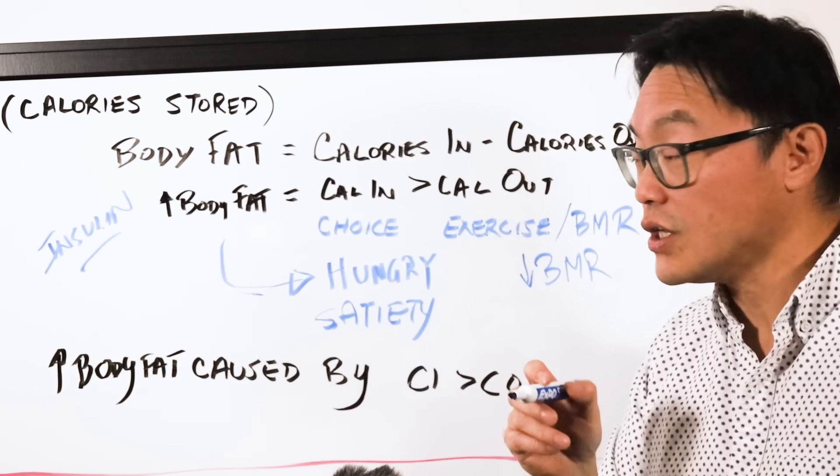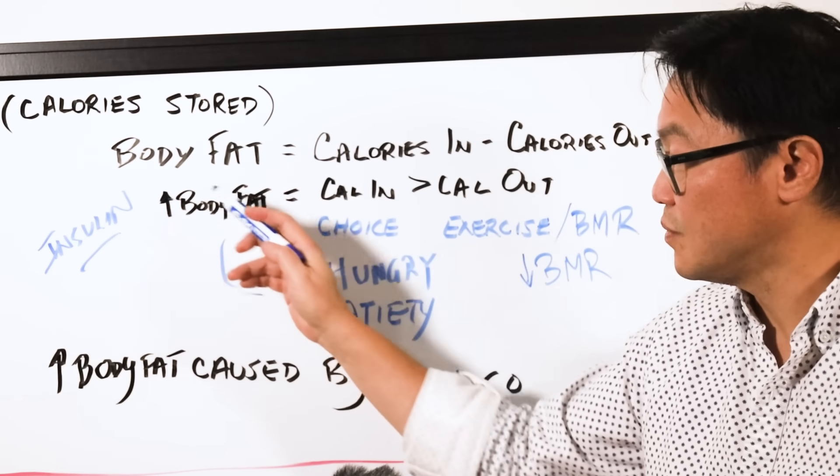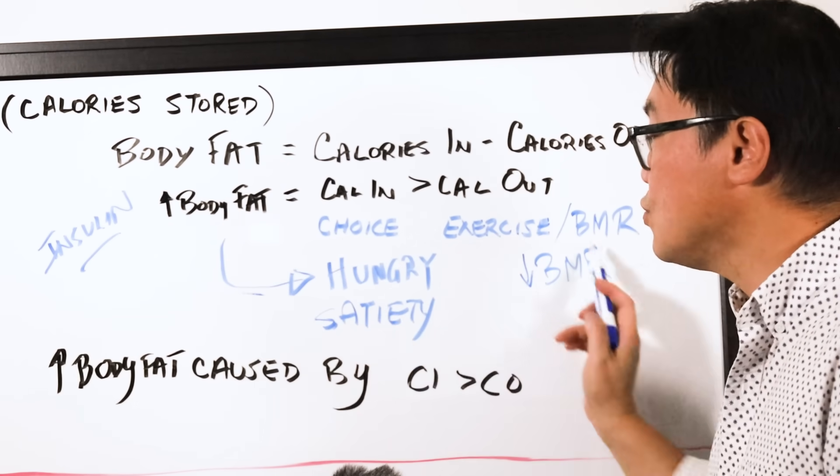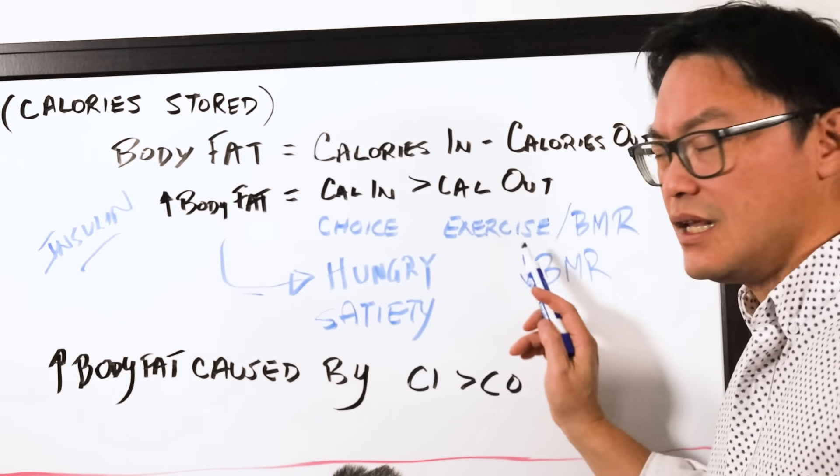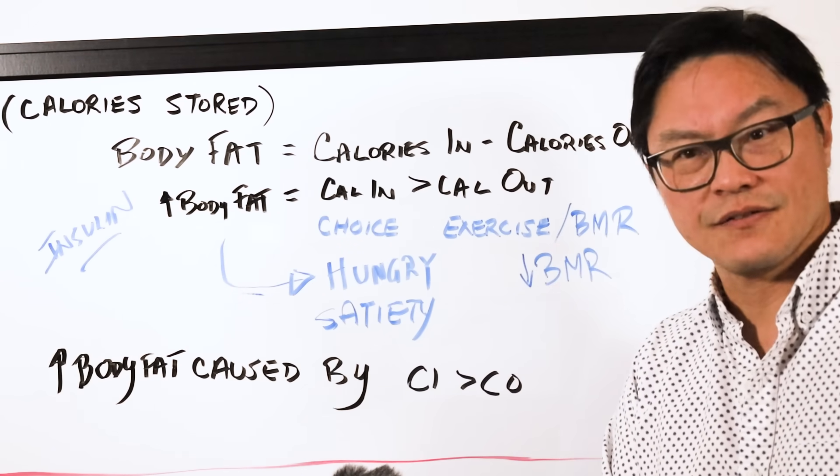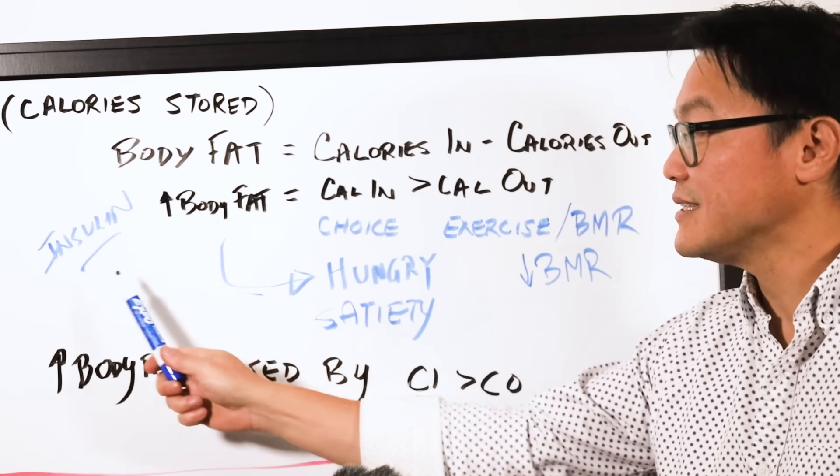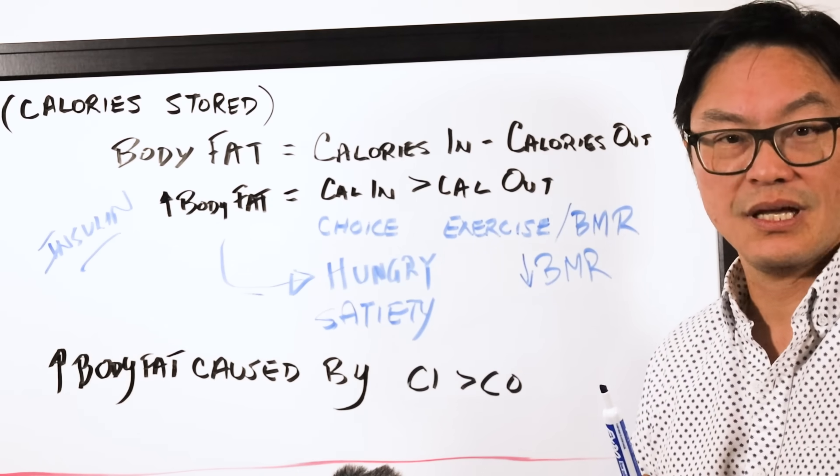So the arrow of causality goes from the increased body fat, which is the cause, to the eating behavior, not the eating behavior to the body fat. This does not break any laws of thermodynamics. This is still true, but it recognizes that this is the most important thing.